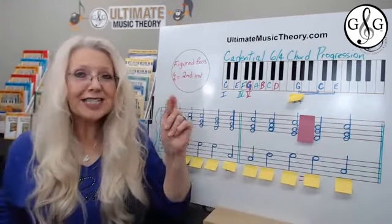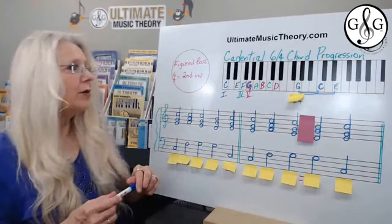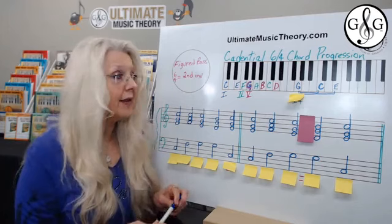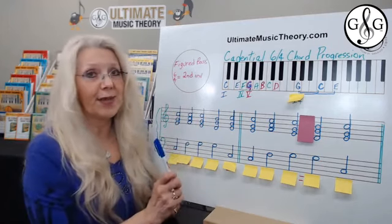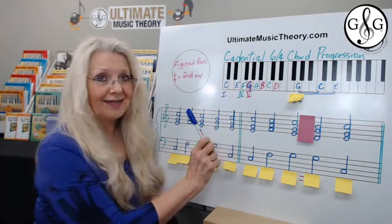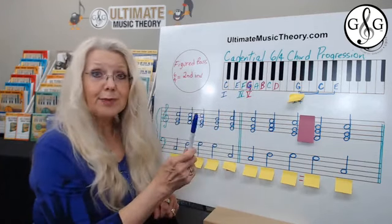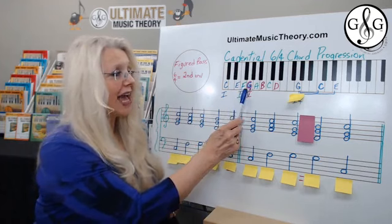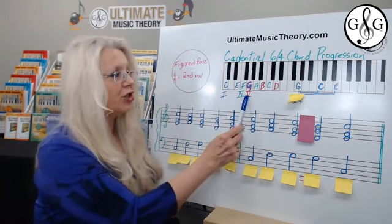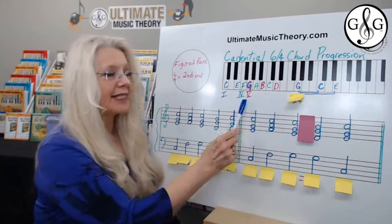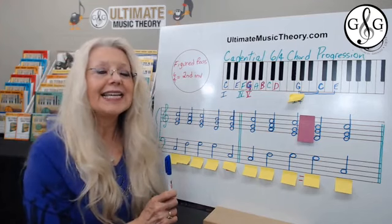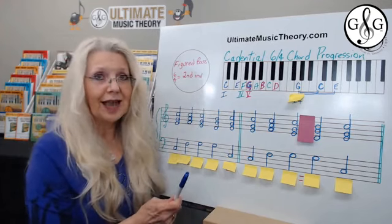Let's talk about chords — specifically the primary chords of one, four, and five in the key of C major. The one chord is C-E-G, the subdominant fourth degree is F-A-C, and the dominant chord is G-B-D — that's the five chord. Figured bass indicates the intervals that are created above the lower notes.